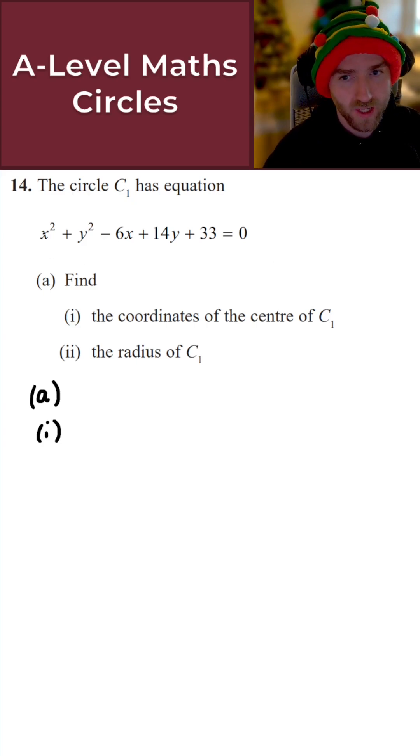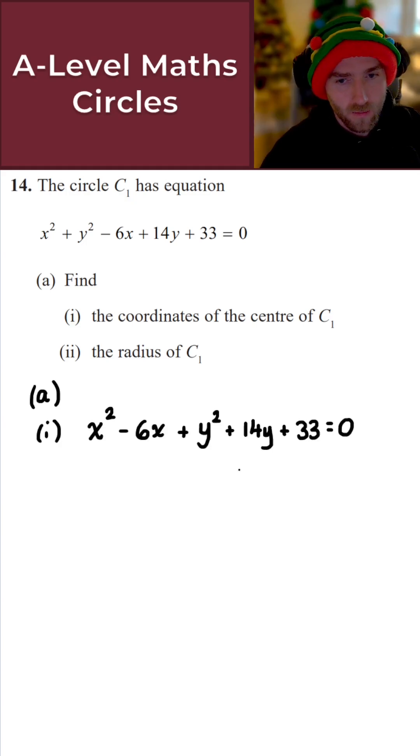So to begin with here, let's just group the x terms together and also group the y terms together. So if we group the x and the y terms together here, we obtain the following. What we now need to do then is just complete the square twice here. I'm going to complete the square on the x terms here and also complete the square on the y terms. And from there, we can just simplify and continue.